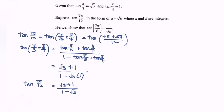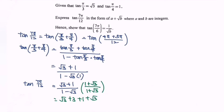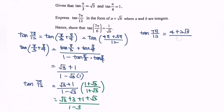Relate to the situation — here we have to multiply by the conjugate, which is (1 + √3) / (1 + √3). So we get (√3 + 3 + 1 + √3) / (1 − 3). Finally, tangent(7π/12) = (4 + 2√3) / (−2).